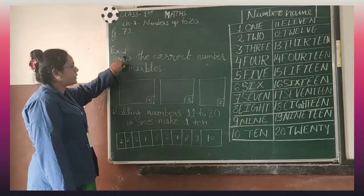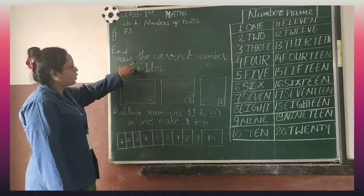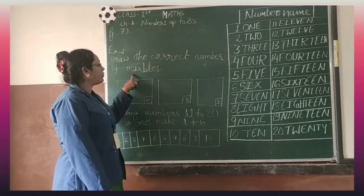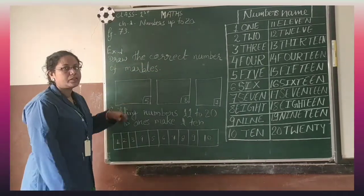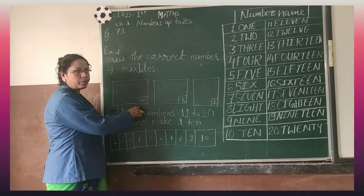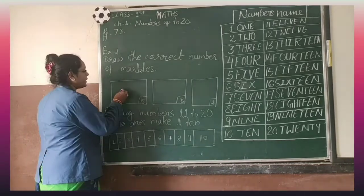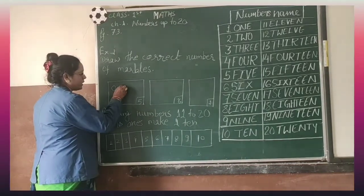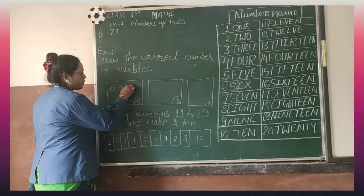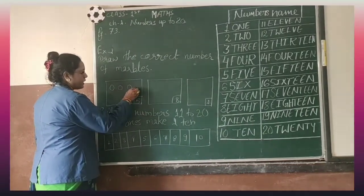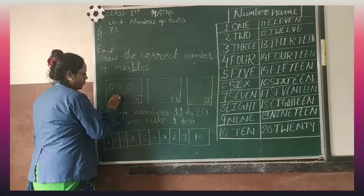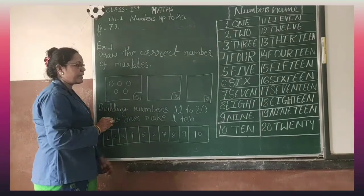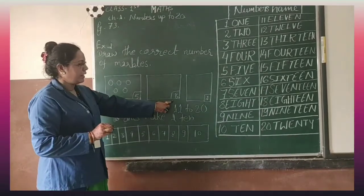Now let's do page number 73, exercise first. Draw the correct number of marbles. See here: 5. Draw it — 5 marbles: 1, 2, 3, 4, 5.